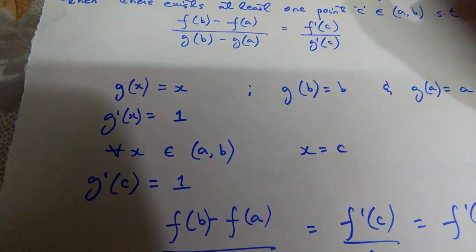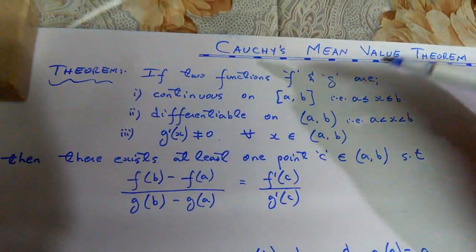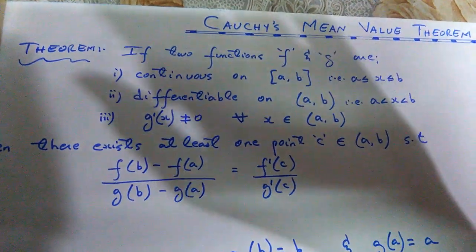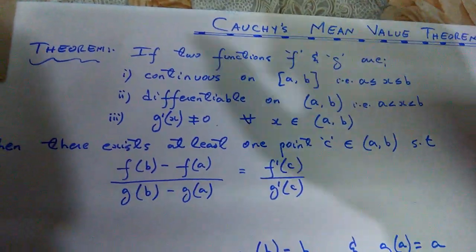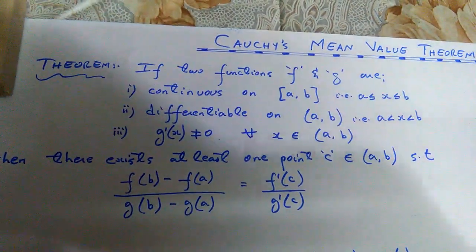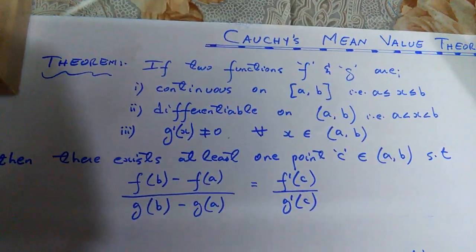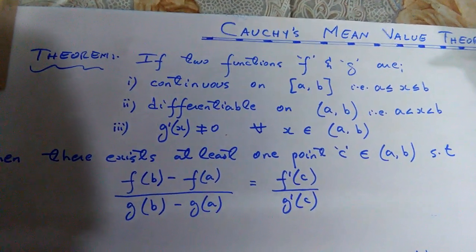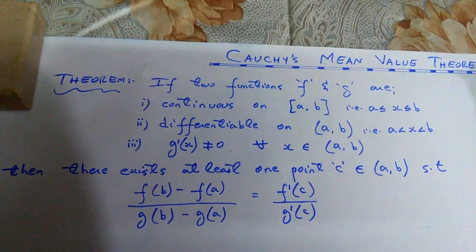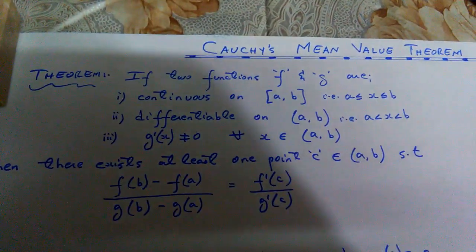Now we are going to approach a relative example for Cauchy's Mean Value Theorem. We are going to solve that example, and then we will try to understand the same question geometrically — we are going to have a geometrical interpretation of Cauchy's Mean Value Theorem. But before the geometrical approach, we should solve it numerically and obtain the value of c.